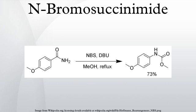Bromination of aromatic derivatives: Electron-rich aromatic compounds, such as phenols, anilines, and various aromatic heterocycles, can be brominated using NBS. Using DMF as the solvent gives high levels of para-selectivity.